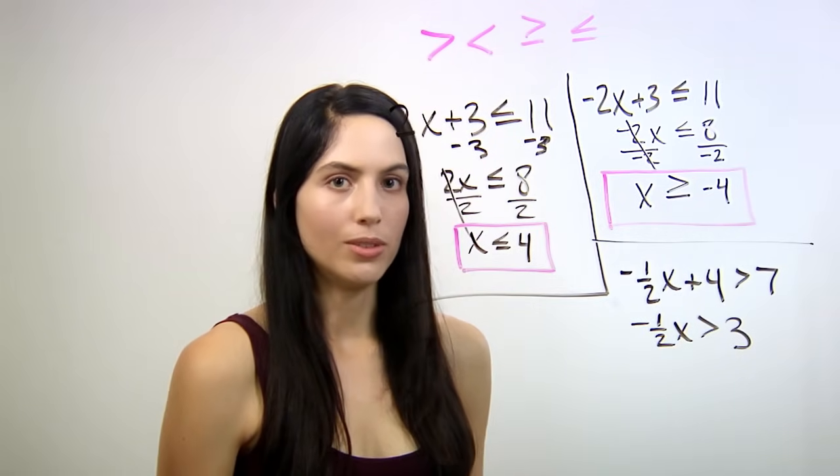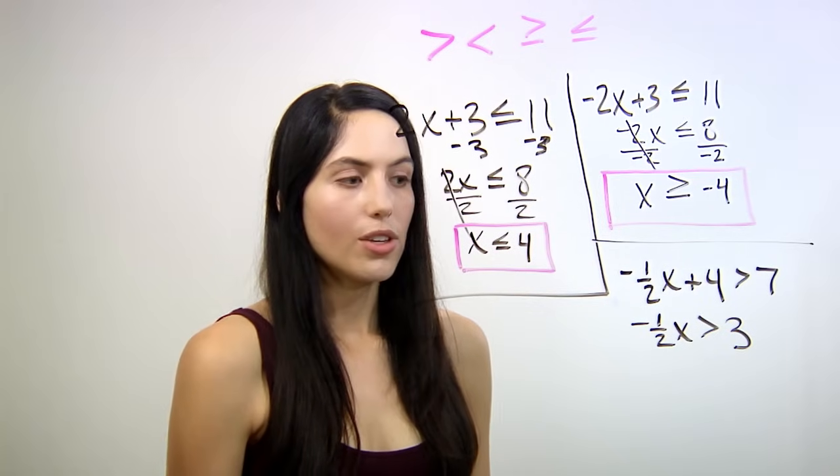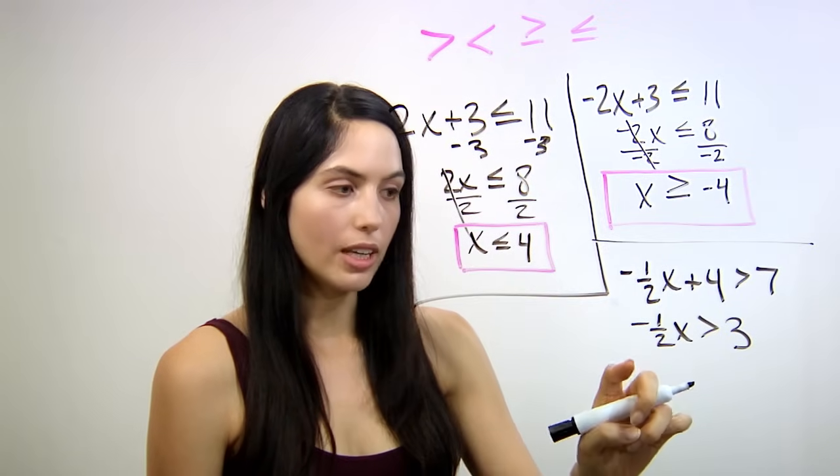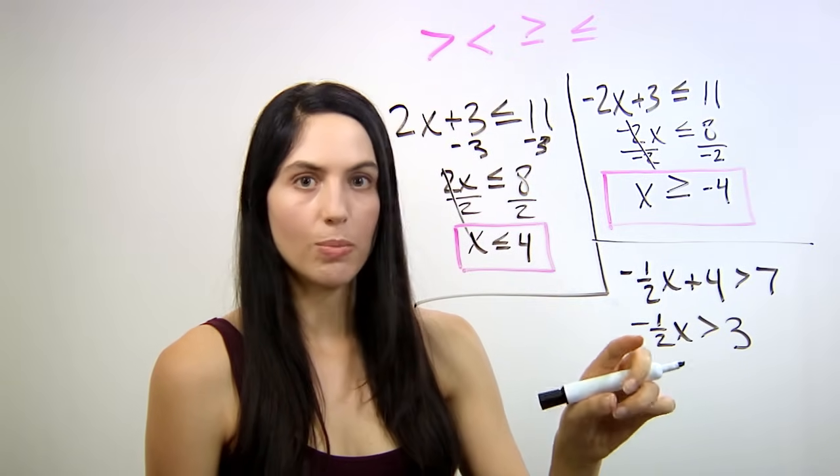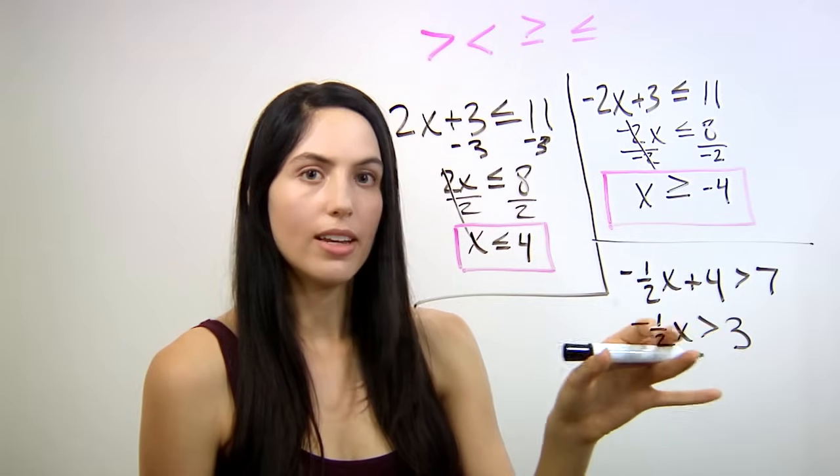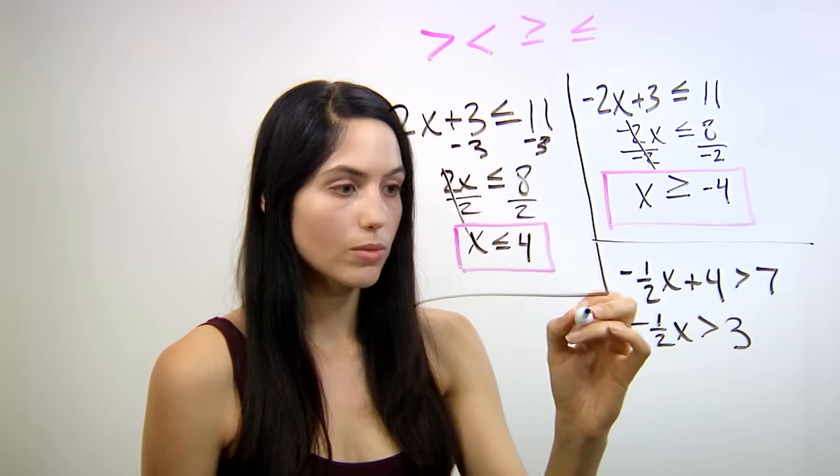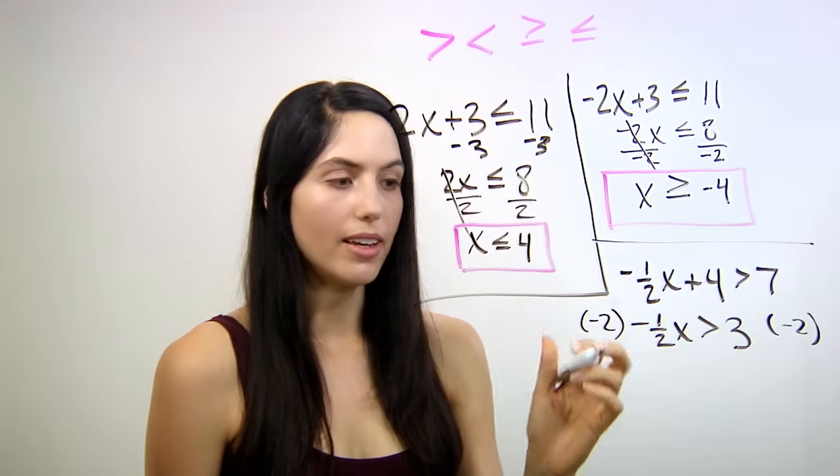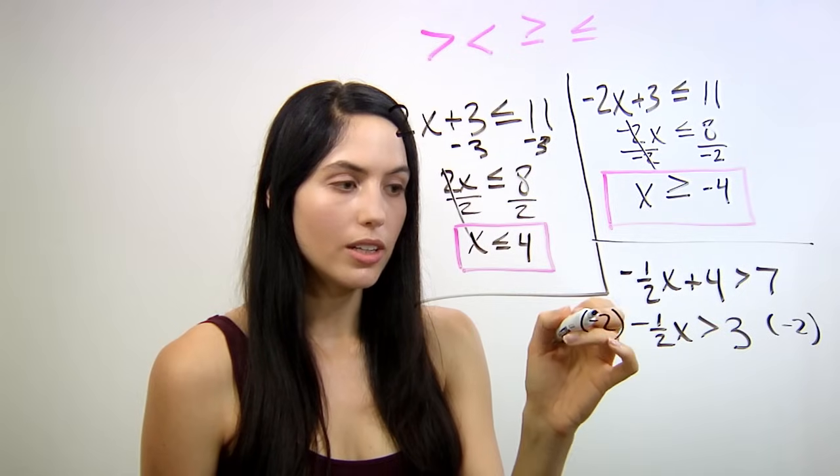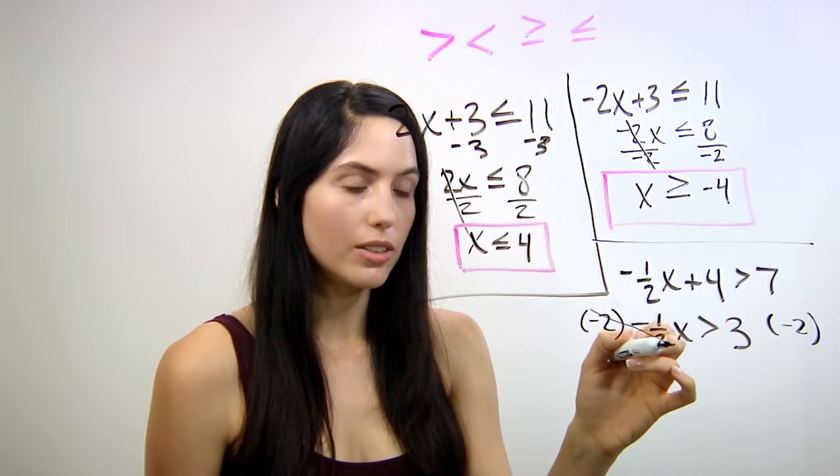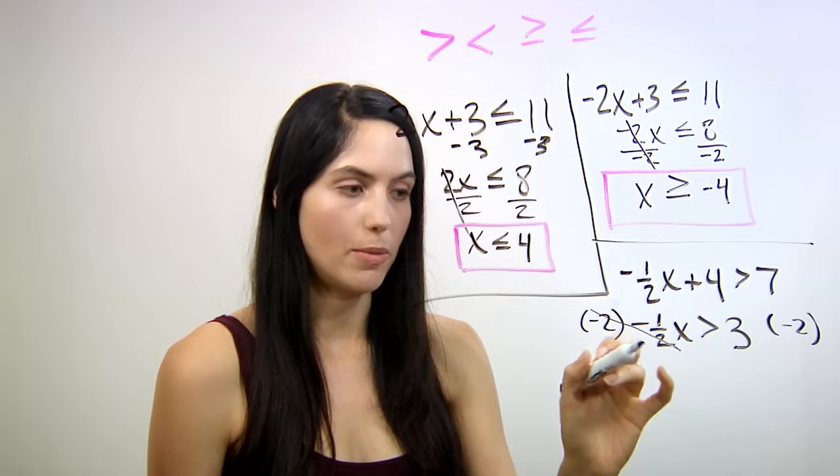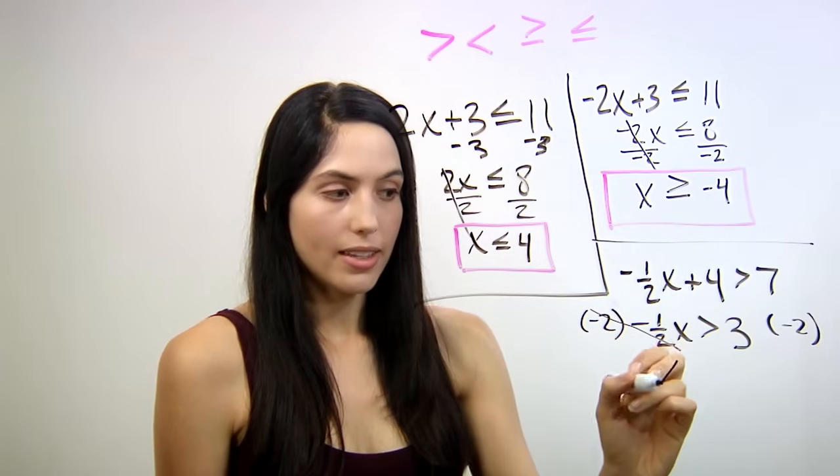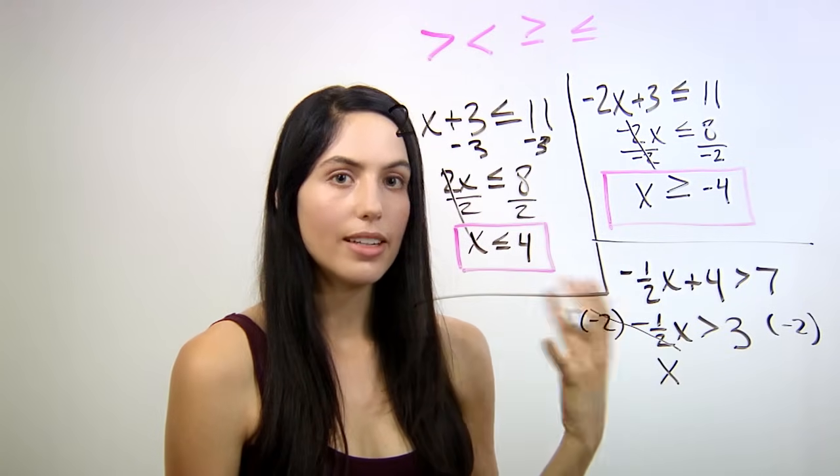If you want x alone in this equation, you would actually need to clear this fraction, clear the negative one-half. The fastest way to do that is to multiply both sides by negative 2. Because if you multiply by negative 2, you'll clear the fraction. You'll cancel the 2 in the denominator.